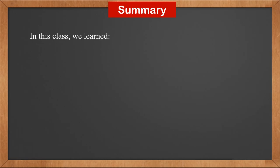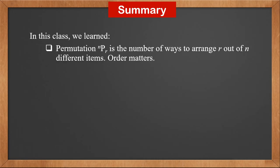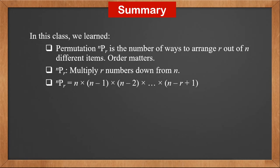In this class, we learned permutation NPR is the number of ways to arrange R out of N different items, and order matters. NPR is multiply R numbers down from N. It is N times N minus 1, times N minus 2, times all the way down to N minus R plus 1. NPR is also equal to N factorial over N minus R factorial. Full permutation NPN is N factorial.